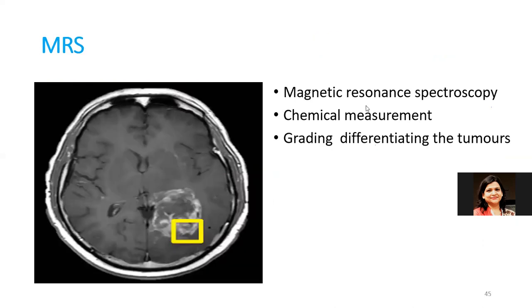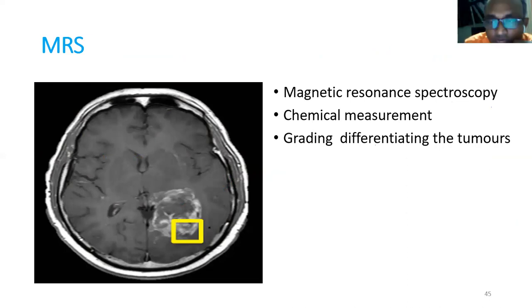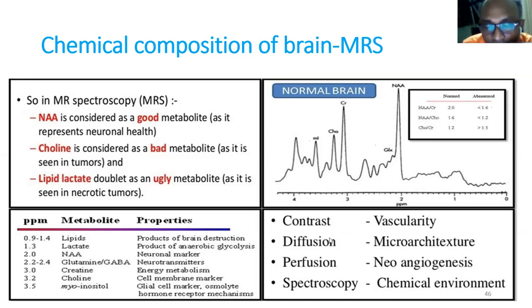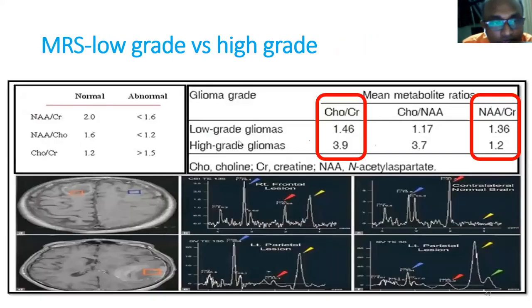MR spectroscopy (MRS) measures the chemical environment of tissue. In normal tissue, choline is low and NAA (N-acetylaspartate, representing neuronal activity) is high. In tumor, choline increases, creatine decreases, and NAA decreases. NAA is a good metabolite; choline is a bad metabolite indicating cell membrane turnover; lipid lactate indicates necrotic tumors. Contrast gives vascularity; diffusion gives microarchitecture; perfusion gives neoangiogenesis; spectroscopy gives chemical environment.